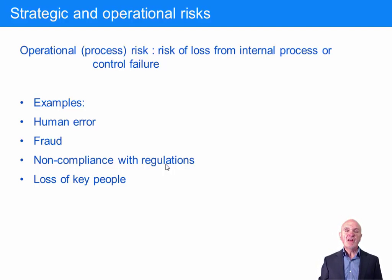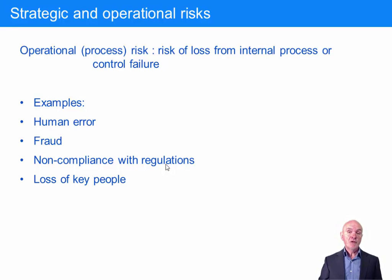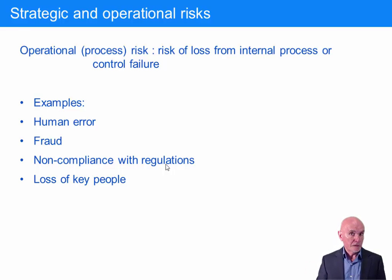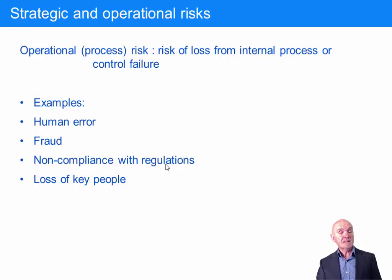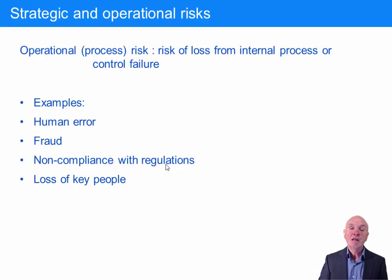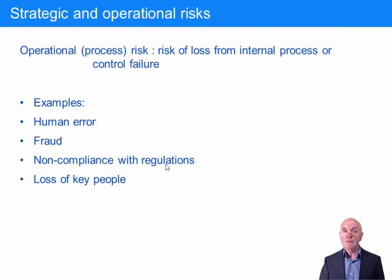Operational risks are more the day-to-day risks — basically, things just going wrong. Examples include human error: somebody doesn't shut off a machine properly and releases nasty stuff into the local river, or someone hasn't set the machine properly and you produce 10,000 units that have to be scrapped because they're the wrong size. Fraud is also a risk — somebody putting their hand in the till or stealing inventory — these are short-term operational risks.